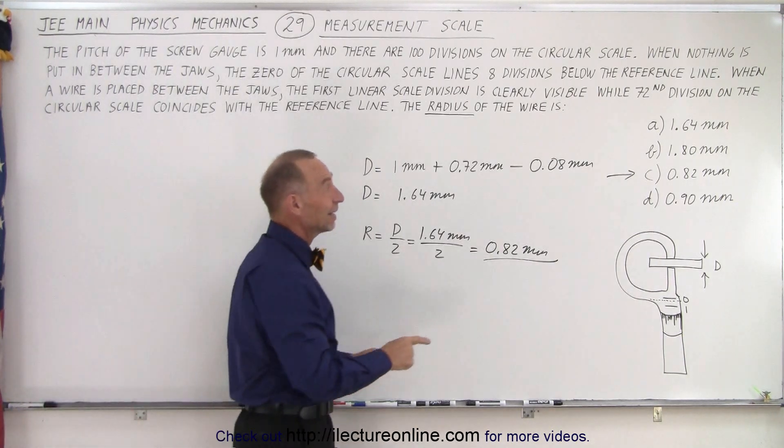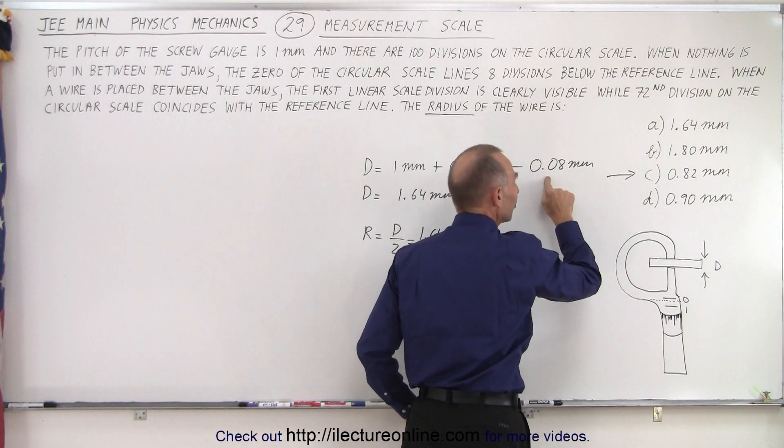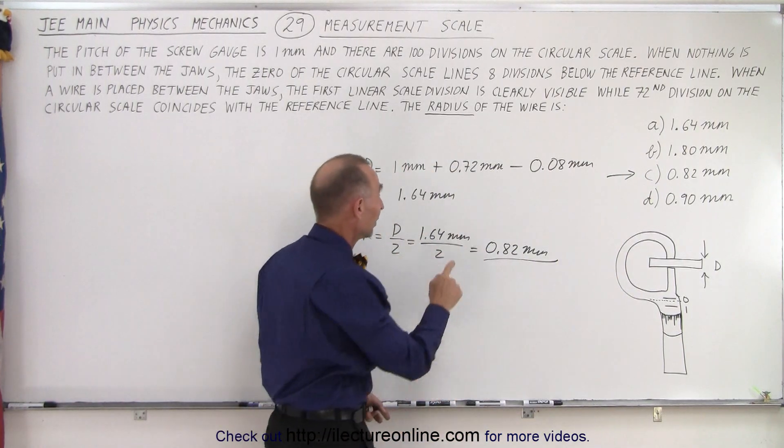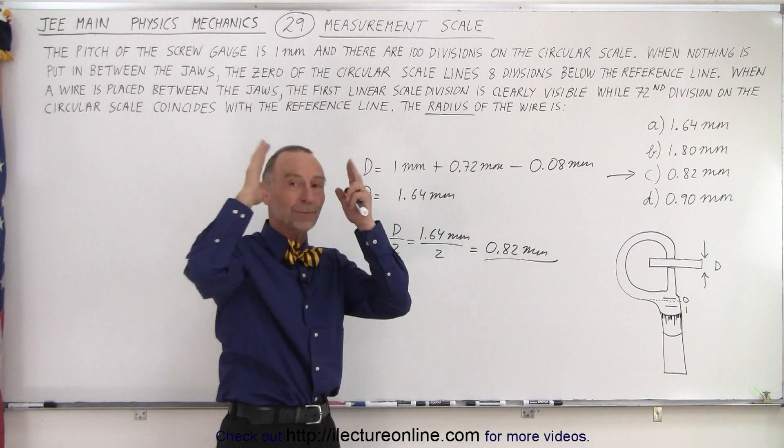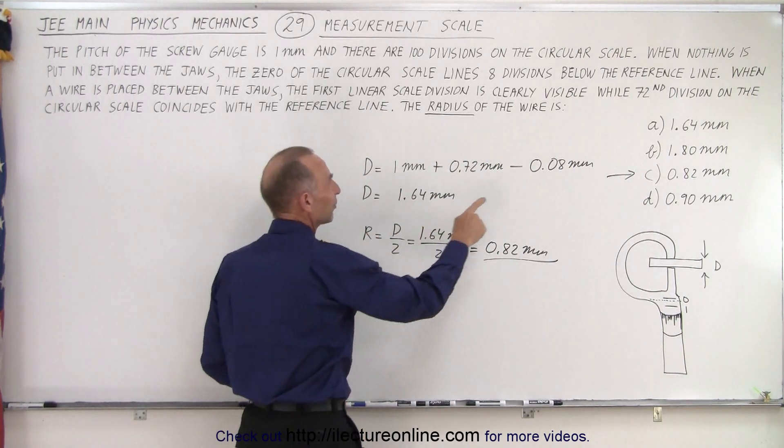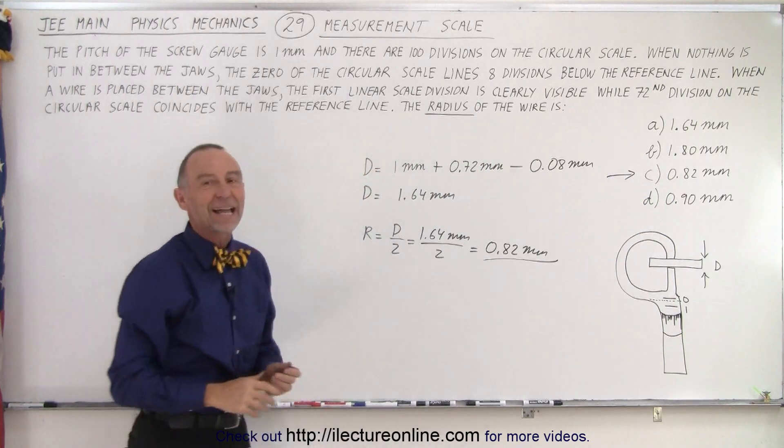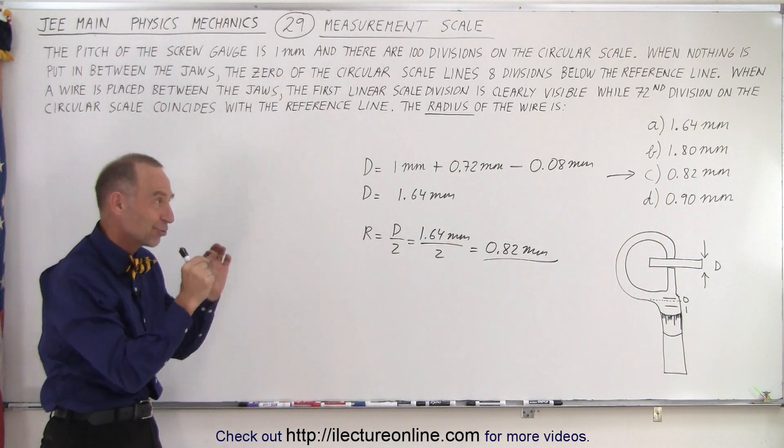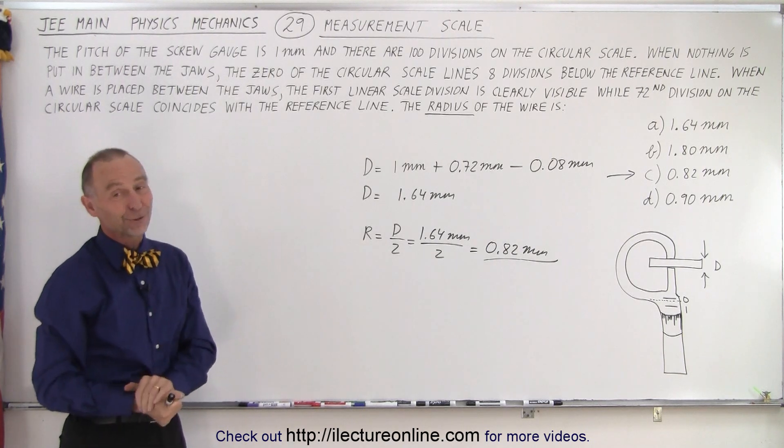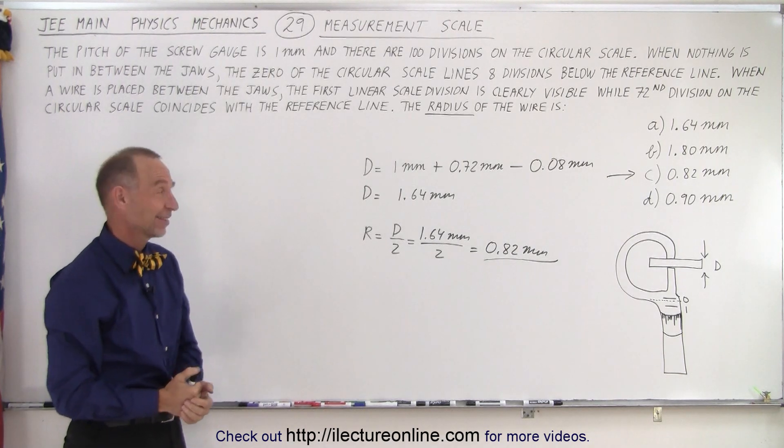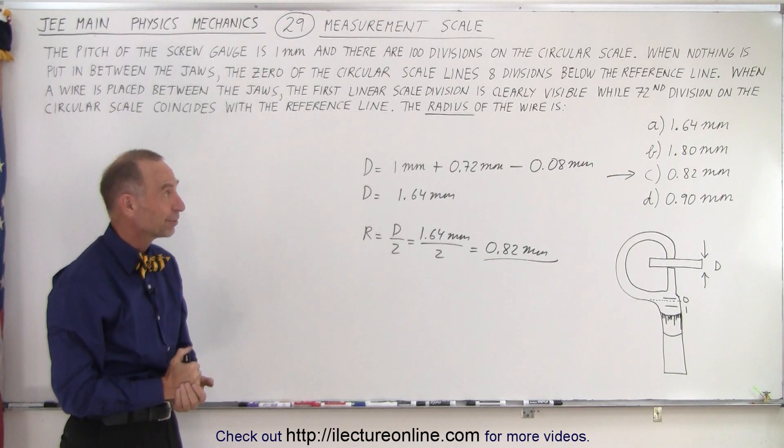That means that if you had counted it in the wrong direction, if you had added 0.08 millimeters instead of subtracted, then you'd end up with 1.80 millimeters, you would pick B, and then if you realize you're looking for the radius, you divide 1.8 by 2, you get D. So it's full of landmines, so to speak. You really have to be careful about this one that you're interpreting it correctly. And that's not always easy to do, especially with the JEE main test questions. It's not always clear what they're asking for, so you have to be careful.